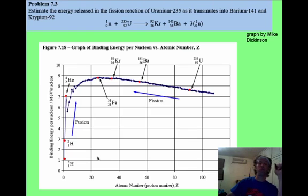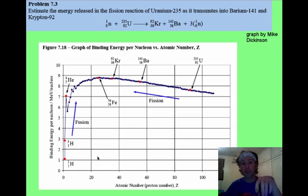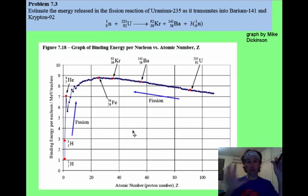Here's a fission problem that I want you to solve using this graph provided below. Whenever you have a nuclear problem, almost always you're going to look at your reactants, look at your products, and compare the masses, looking for a mass defect. Or you're going to look at binding energies from reactants to products and look for a difference between reactants and products.